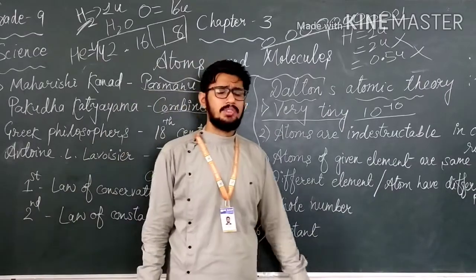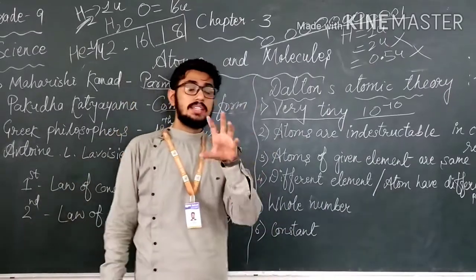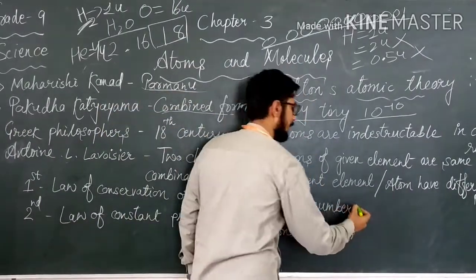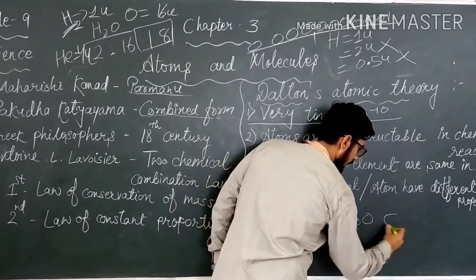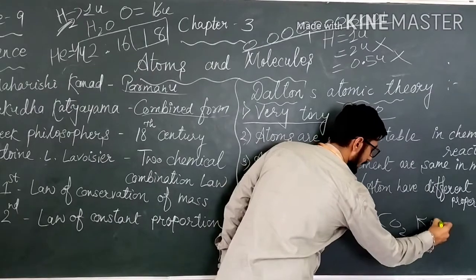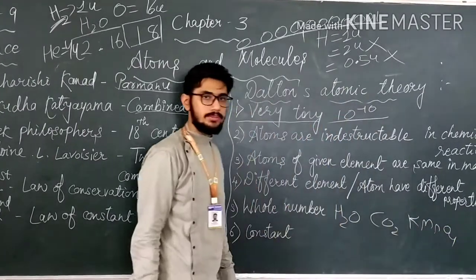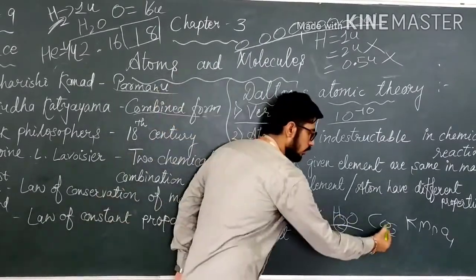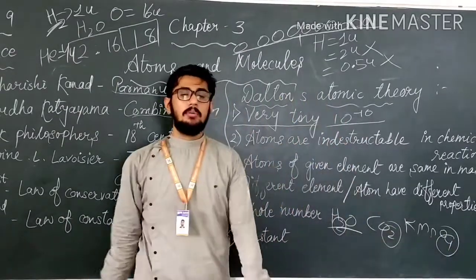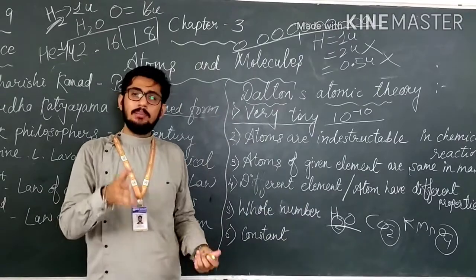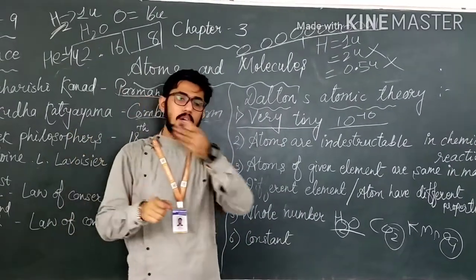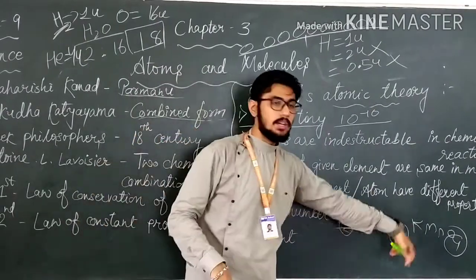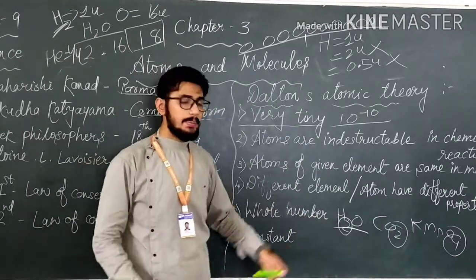Fifth one: whole number. Always in chemical reactions, atoms are combining with each other in whole number form. Now, we have compounds like H2O, CO2, KMnO4. I have written a few compounds. We have to see that in H2O we have 2, that is a whole number. CO2 has 2, a whole number. KMnO4 has 4, a whole number. Now, whole number means numbers starting from 0 to the positive side infinitely. That means whole numbers, integers. So always you are going to get whole numbers in a chemical reaction.